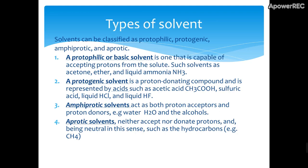In Bronsted-Lowry there are four types of solvents. First, protophilic or basic solvents — these accept a proton from the solute. Second, protogenic solvents — these are proton-donating, or acidic solvents. Third, amphiprotic solvents — these act as both a proton acceptor and proton donor, like water, which is the most important example. Fourth, aprotic solvents — these neither accept nor donate protons; they are neutral, like methane or hydrocarbons.